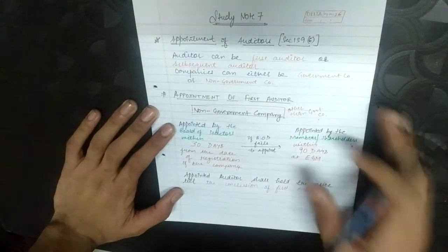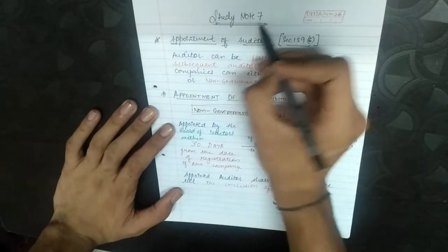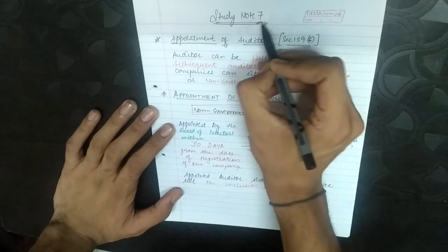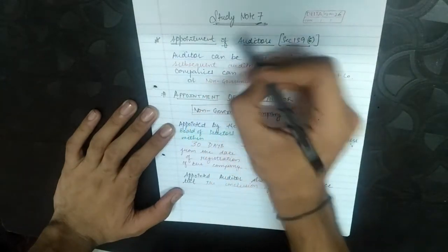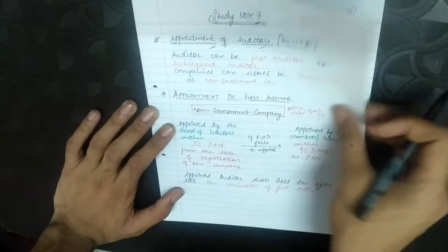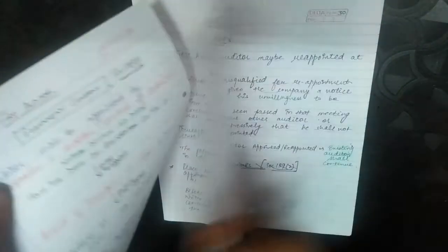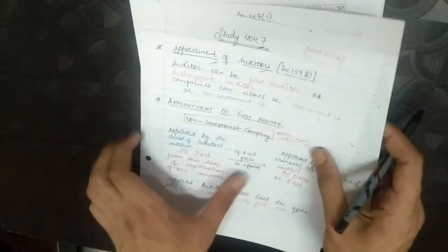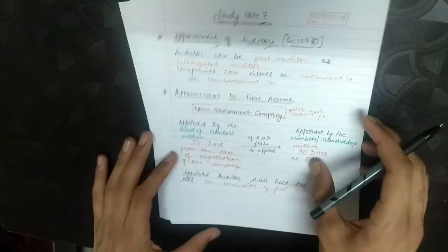Hello everyone. In this video we will study Study Note 7, which is related to appointment of auditors, disqualification of auditor, removal of auditor, subsequent auditor, first auditor, reappointment of auditor, and everything. So without wasting much time, let's begin.